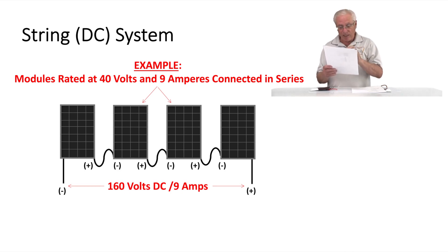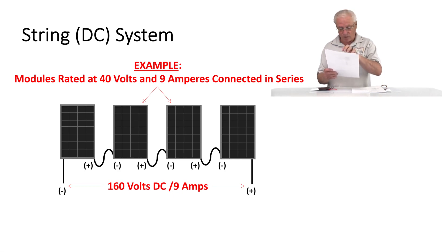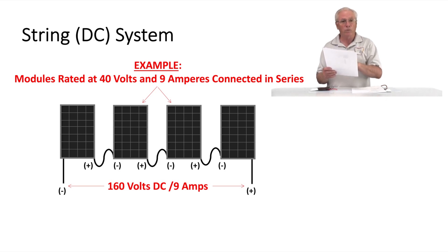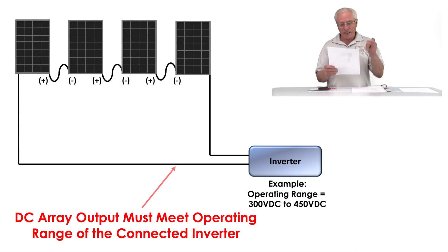In PV systems, you will find these string systems in a lot of installations. There are other types of systems — we'll talk about microinverter systems in a moment — but string systems are probably the most common thing you'll see.